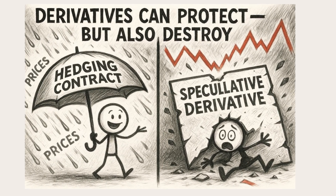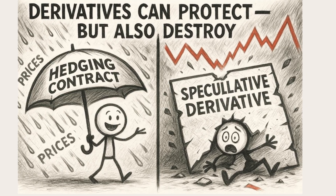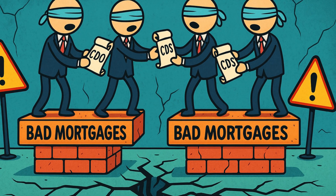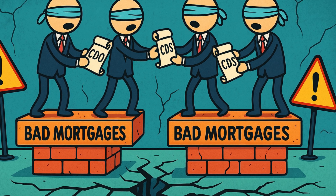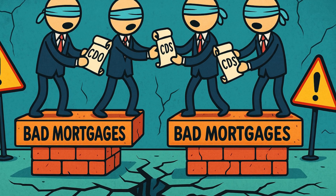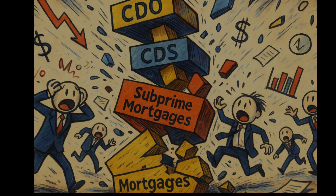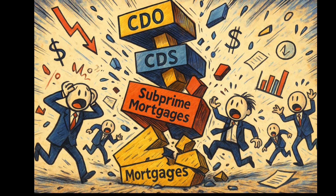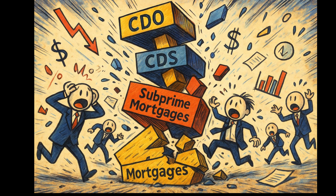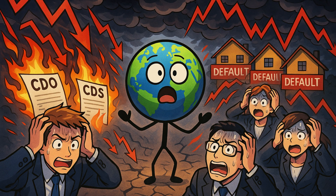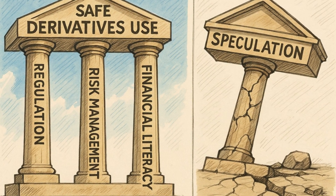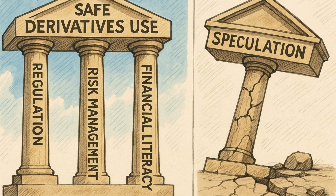Derivatives can protect but also destroy. In the 2008 global financial crisis, banks were using complex derivatives like CDOs (collateralized debt obligations) and credit default swaps without understanding the risk. Once the underlying mortgages failed, the entire system collapsed. That's why regulation, risk management, and financial literacy are critical when dealing with derivatives.